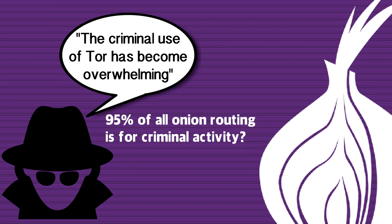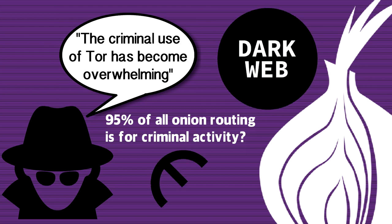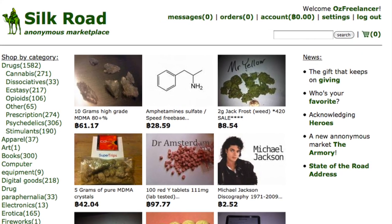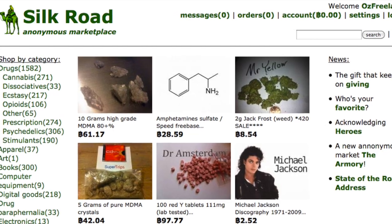In the eyes of many, Tor has in fact become synonymous with the dark web, as it's the go-to means of accessing the illicit corners of the internet, like Silk Road, a marketplace made for the sale of illegal substances.